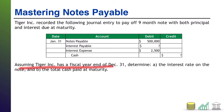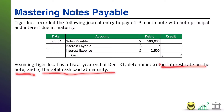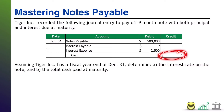Assuming Tiger Inc. has a fiscal year end of December 31st, and notice this journal entry occurred on January 31st — determine: one, the interest rate on the note, and two, the total cash paid at maturity. This is really going to test whether or not you understand the components of notes and their related interest and how those things are calculated over time.